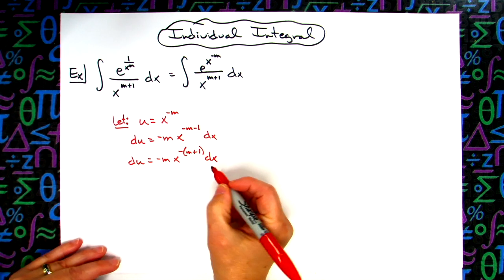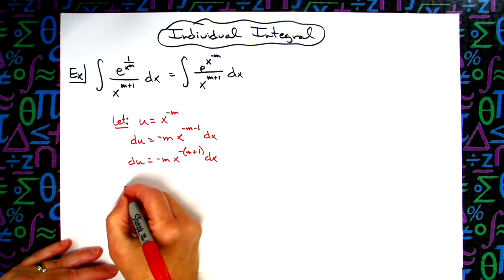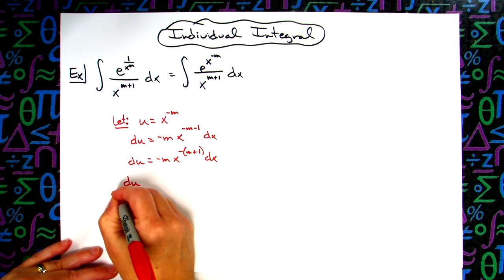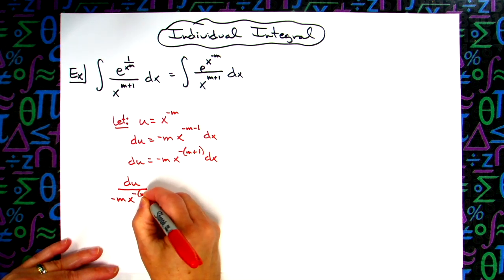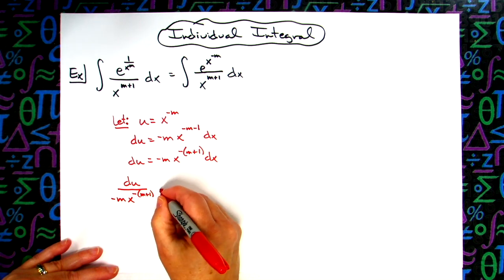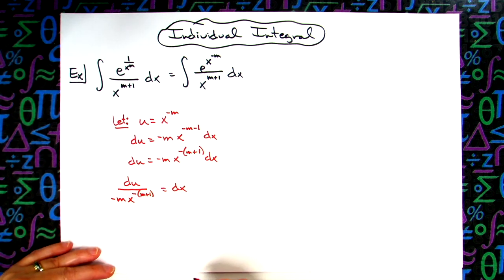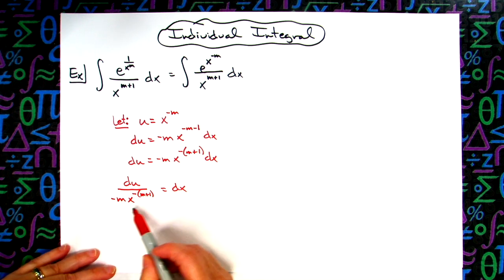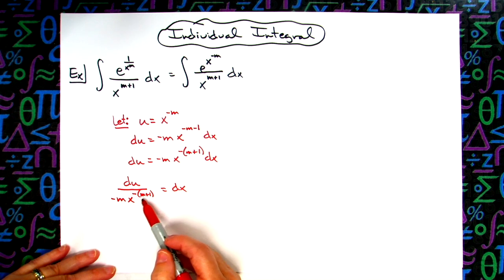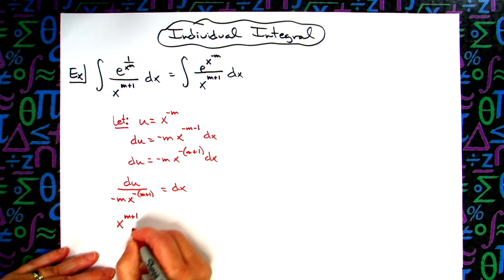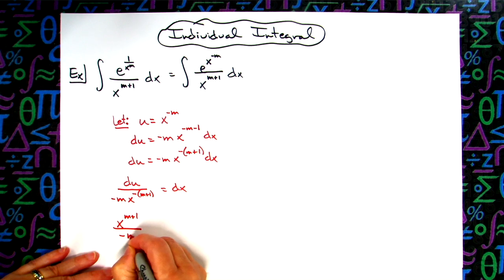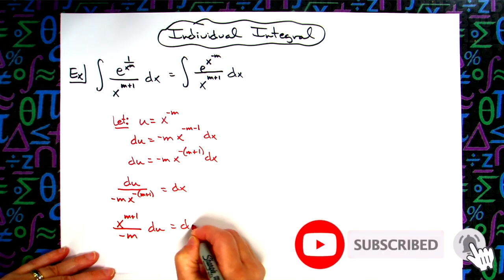Now at this point then I'll go ahead and solve all the way down for that dx. So then I'm going to have du over negative m x raised to the negative m plus 1, and then equals the dx. Now let's do one more thing before we leave this here. Let's take this x raised to a negative exponent and do laws of exponents on that, move it up to the top, and make it positive. So I'm going to have x raised to m plus 1 all over negative m, and then my du is equal to that dx.